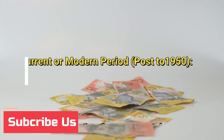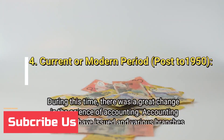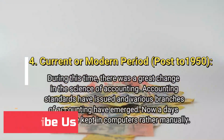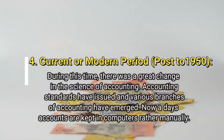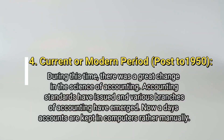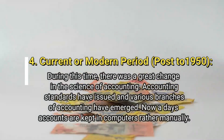Stage 4: Current or modern period, post-1950. During this time, there was a great change in the science of accounting. Accounting standards have been issued and various branches of accounting have emerged. Nowadays, accounts are kept on computers rather than manually.